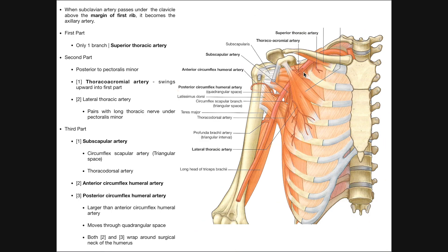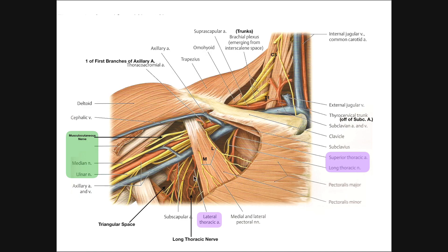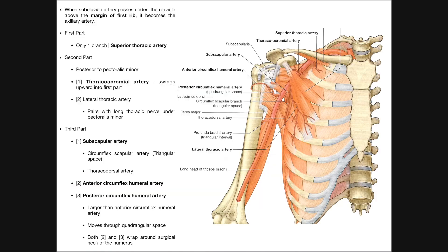Looking at the branches off the axillary artery at the three different regions — the first branch that comes off in the first part is the superior thoracic artery. It's coming off the axillary artery underneath the subclavius muscle. You can see the superior thoracic artery emerging from the axillary artery underneath this muscle. Notice that initially in the axilla, the long thoracic nerve travels with the superior thoracic artery, but then deviates and runs with the lateral thoracic artery.